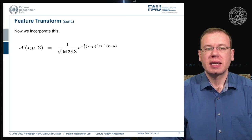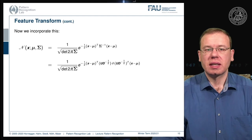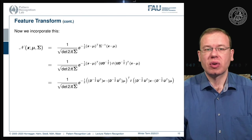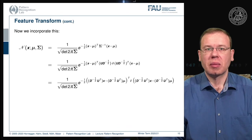We can now apply this decomposition to a general Gaussian distribution. Starting from the original definition, we replace the covariance matrix with the SVD factorization. We can then move the resulting terms inside the brackets around the observation x and the mean vector. This shows that we can essentially transform our distribution such that the actual covariance matrix becomes an identity matrix.